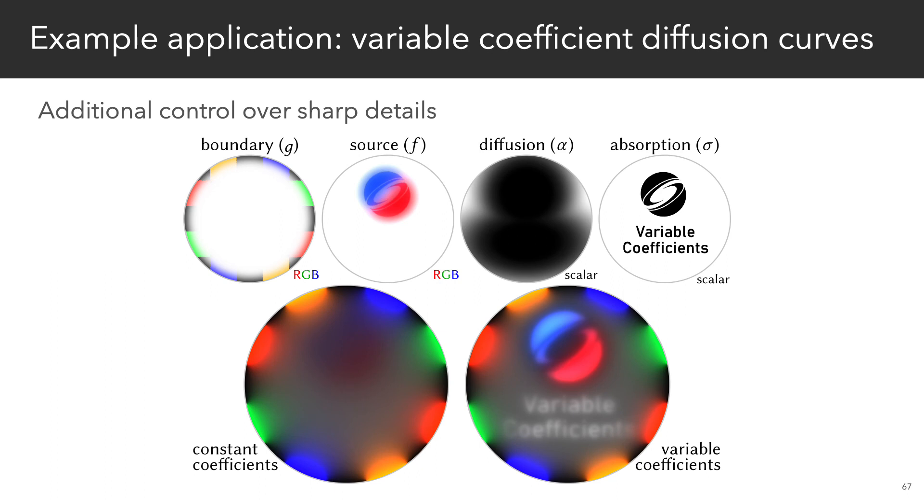A graphics example is to generalize so-called diffusion curves to variable coefficients, giving more control over how sharp or fuzzy details look.